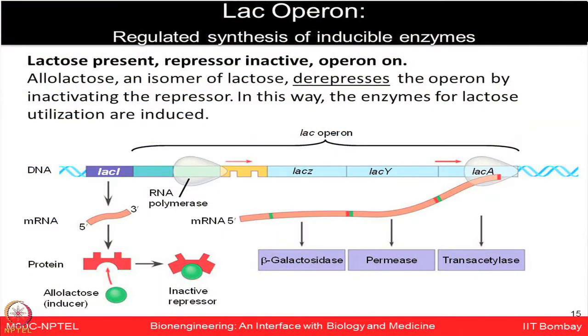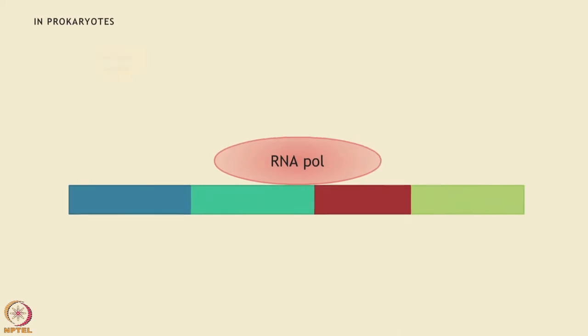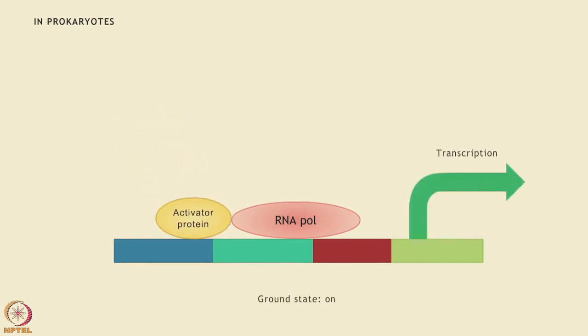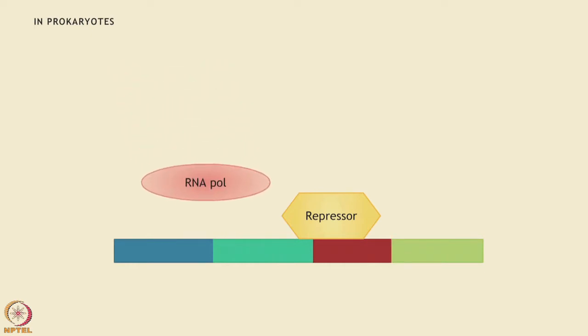The concept of lac operon is very crucial. In this model, allolactose, which is an isomer of lactose sugar, derepresses the operon by inactivating the repressor, allowing lactose-metabolizing enzymes to be induced. In prokaryotes, transcription by RNA polymerase can take place with the help of an activator protein. However, in the presence of a repressor molecule, the binding site for RNA polymerase is inaccessible and transcription does not occur.